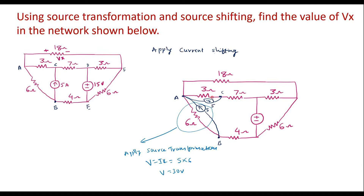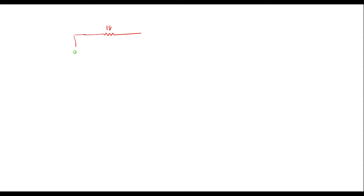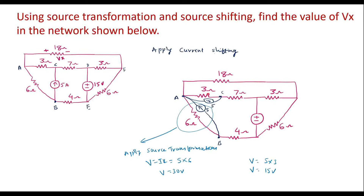Similarly, I can apply voltage source here. I will get V is equal to 5 into 3, therefore V is equal to 15 volts. Now I will replace the current source by a voltage source. When you convert a current source into a voltage source, the resistor will come in series with the voltage source. I will redraw the circuit. Here there was an 18 ohm resistor — I will connect it as it is.